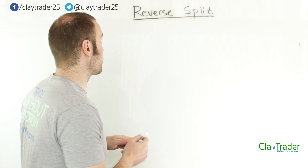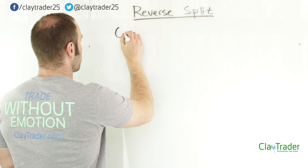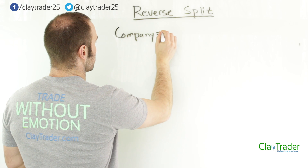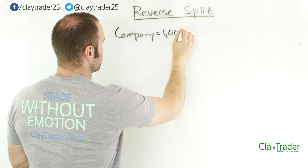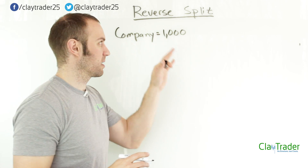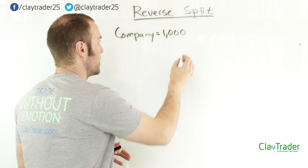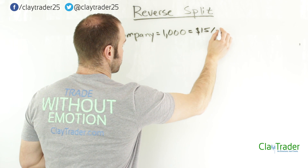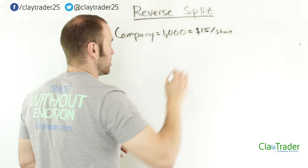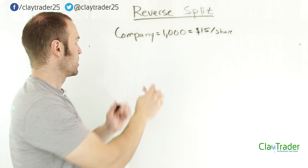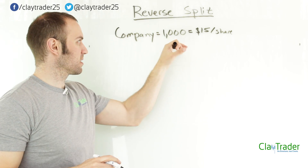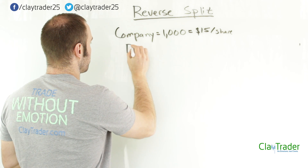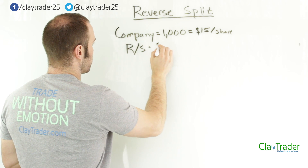We're first going to talk about it from the company perspective — their share structure and all that. Let's say that a company has 1,000 shares available — just for math's sake. So there are 1,000 shares out there and they are at $15 per share. Now let's say they announce that they're going to do a reverse split of five to one.